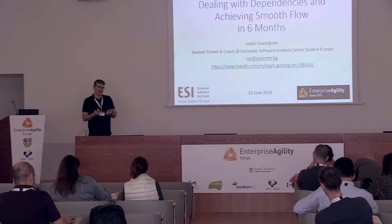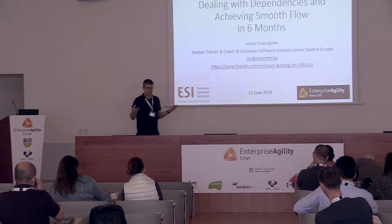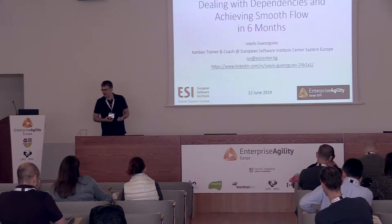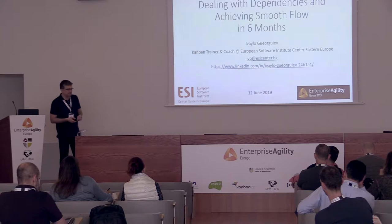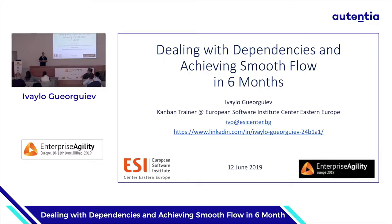But I don't like Agile Initiatives that start with massive training on Scrum, with reorganizing the company in an Agile way — tribes, whatever fancy names you can invent. In this sense, it was an Agile Initiative because it started with a business problem. Now, the title of my talk today: 'Dealing with dependencies and achieving smooth flow in six months' — does it sound like a business problem to solve? Actually, this was the solution to the problem. We'll talk about the problem in a few slides.